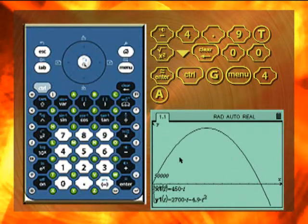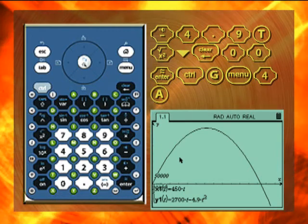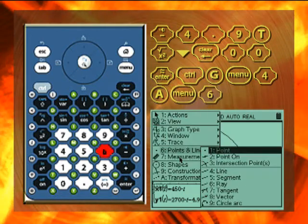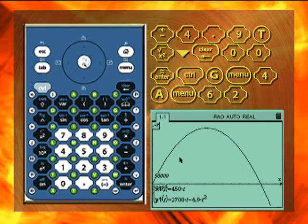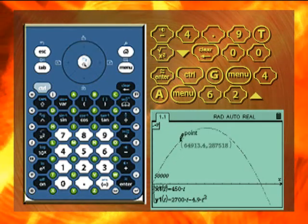Returning to the path of the rocket, place a point on the graph and follow its trajectory. Press menu, 6, and 2 to activate the point tool. Use the nav pad to move the pointer so that it is on the parabola. Press enter, then press escape.